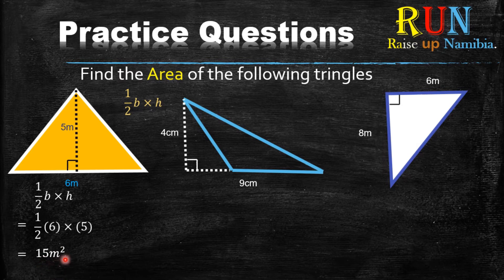You get 15 meters squared. Why is it meters squared? Remember area is always like squared. So because it's area, we say meters squared. And that's your final answer for the first example.